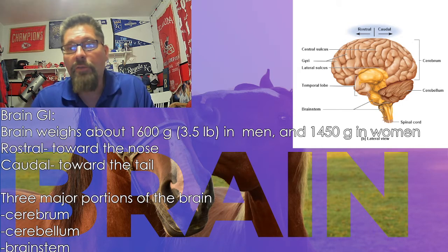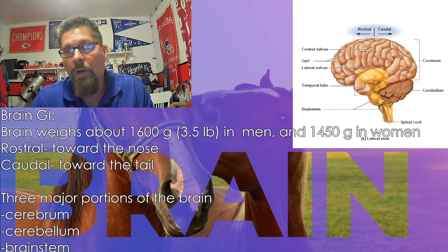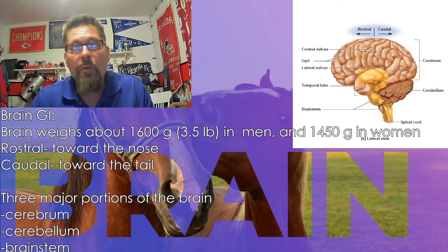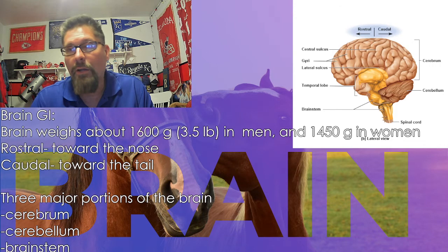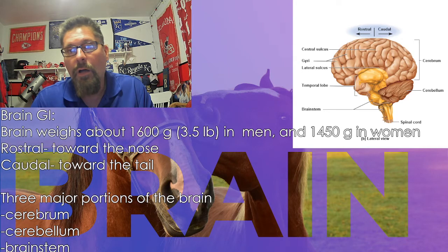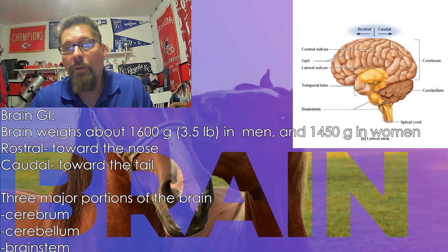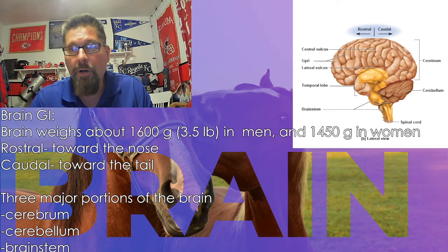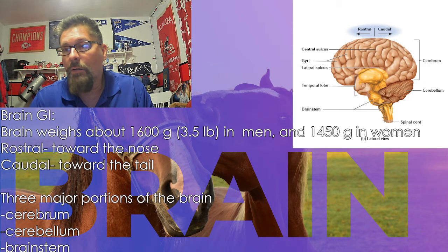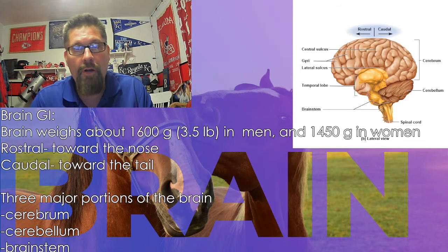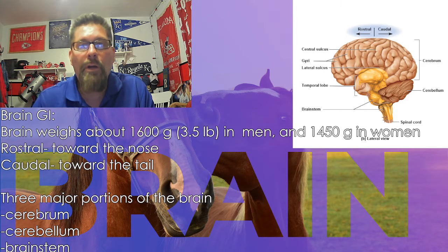When talking about general information for the brain, the first thing to consider is directional terminology. Rostral means towards the nose — so we could say the frontal lobe is rostral. Caudal means towards the tail — so the cerebellum is caudal to the frontal lobe.